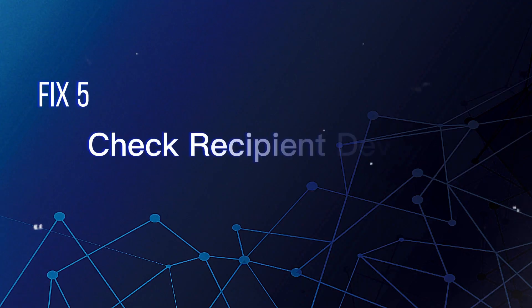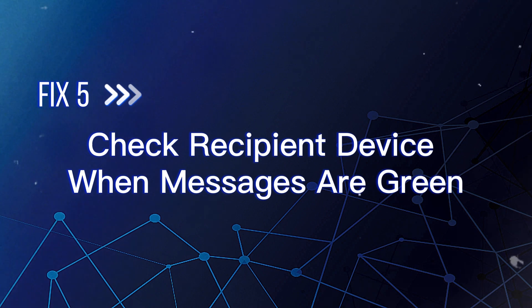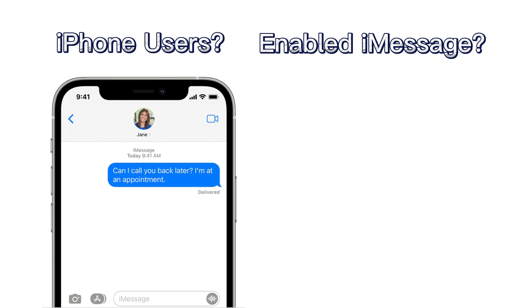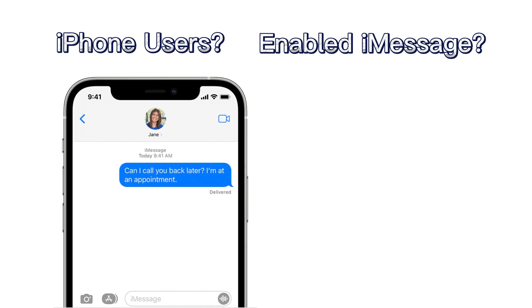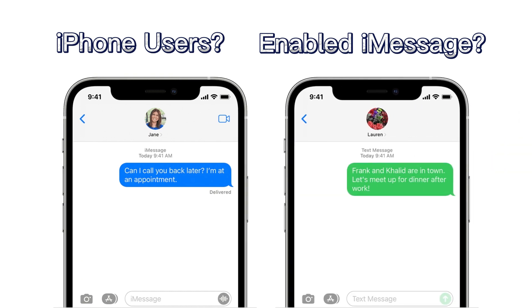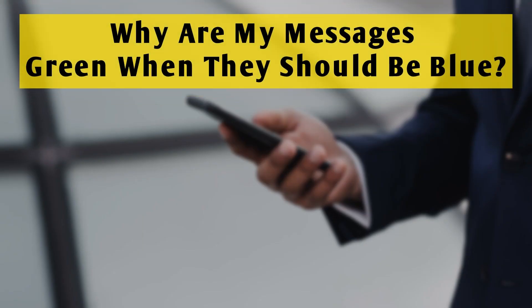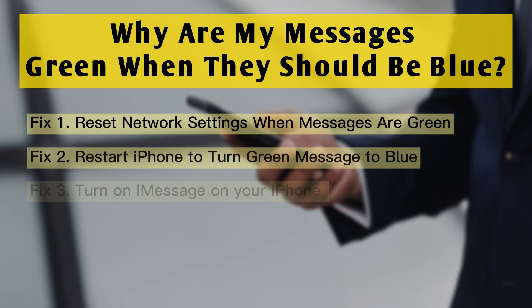Fix 5: Check recipient device when messages are green. You need to check whether the person you sent a text to is using iPhone and whether they have enabled iMessage on their device. If not, your message will switch to deliver by SMS and turn green.